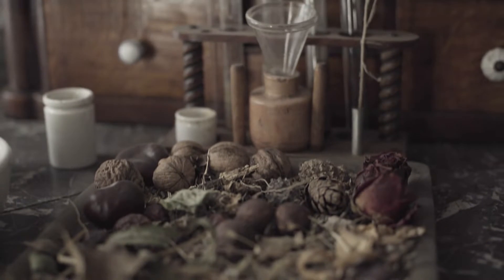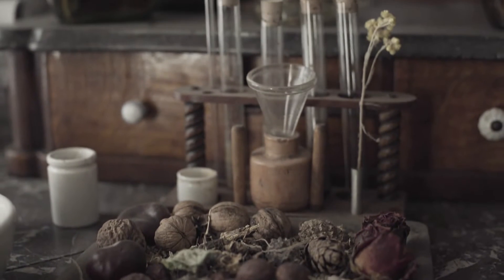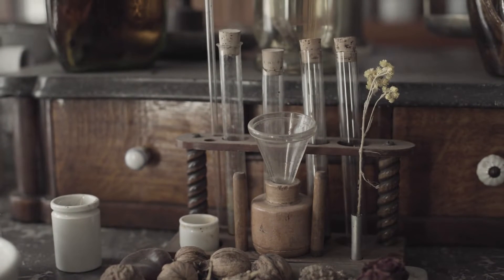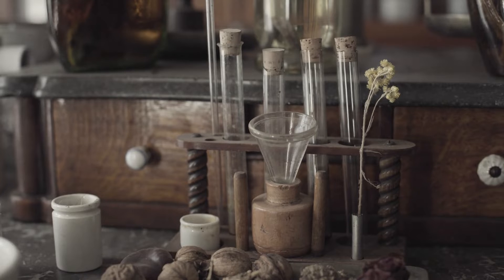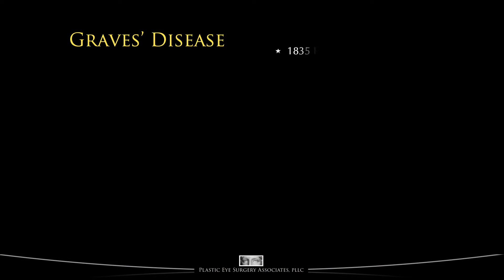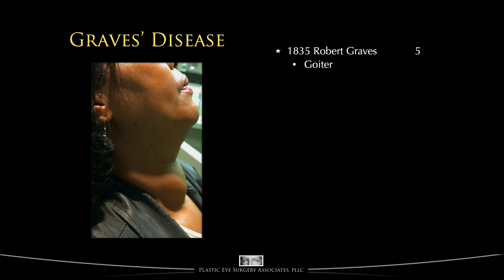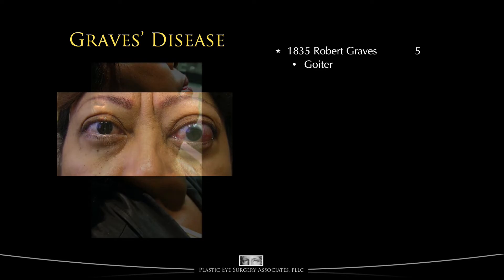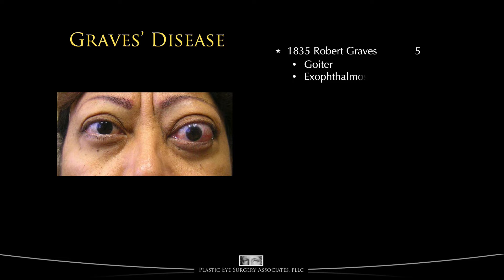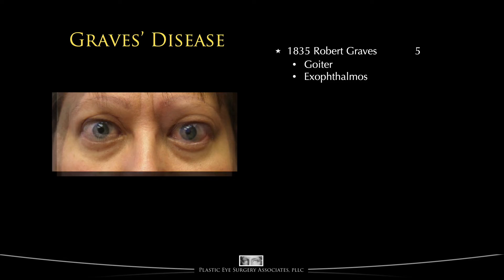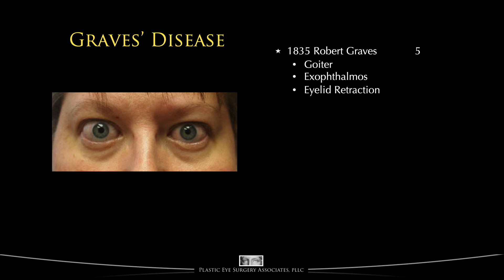Diseases are often named after the person who is believed to first describe them, or by the symptoms the disorder creates. In 1835, Robert James Graves described the disorder with five characteristic features: enlarged thyroid gland, seen as a bulging in the neck called a goiter; bulging eyes, so-called exophthalmos or proptosis; and high lid retraction, which we will describe later.